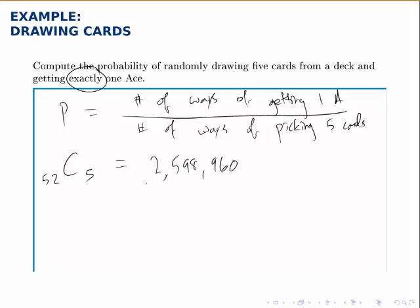Now let's look at the numerator. This is a little bit more tricky. The number of ways of getting exactly one ace. Well, if we get exactly one ace, that means we get an ace and we get four cards that are not aces. So let's think about each of these separately.